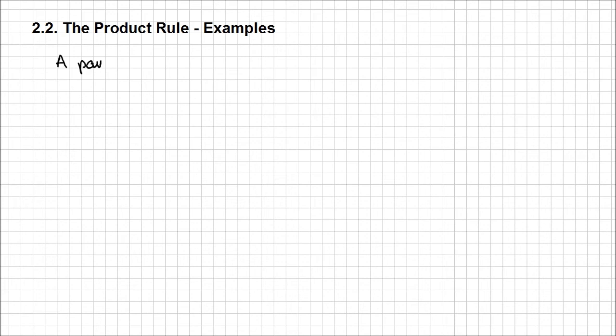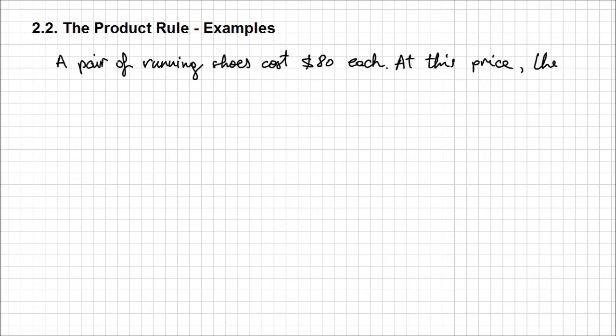Let's consider a store that sells sports goods and among other items, they are selling a particular pair of running shoes that cost $80 each. We know that at this price, the store sells 150 pairs each month.